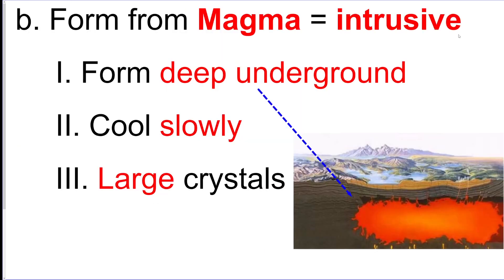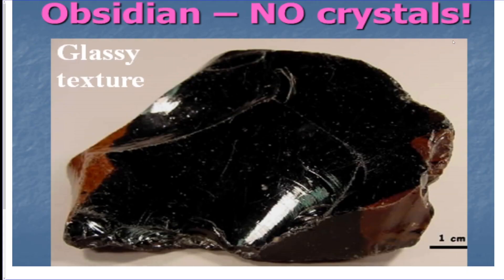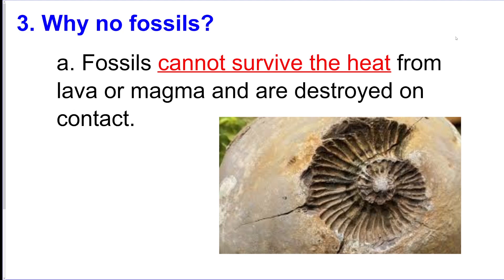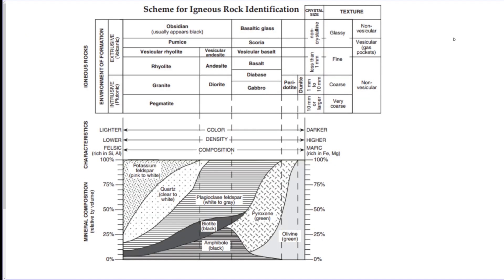If they're intrusive, they form deep underground, which means they cooled slower, so they have nice big crystals. Obsidian is an example of an extrusive igneous rock that doesn't have any crystals — it has a glassy texture. Normally fossils are not found in igneous rocks because they're created from lava and magma, so the fossils are destroyed. This is the igneous rock chart — make sure you're aware of how to read it.